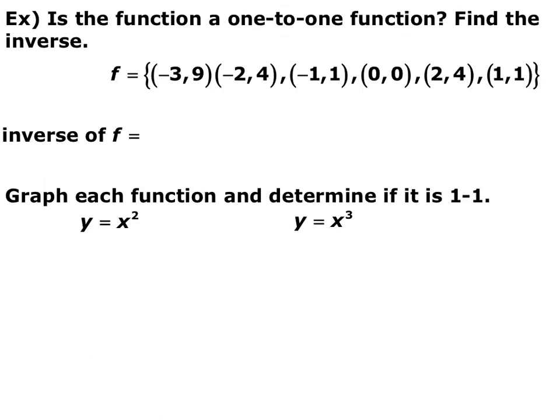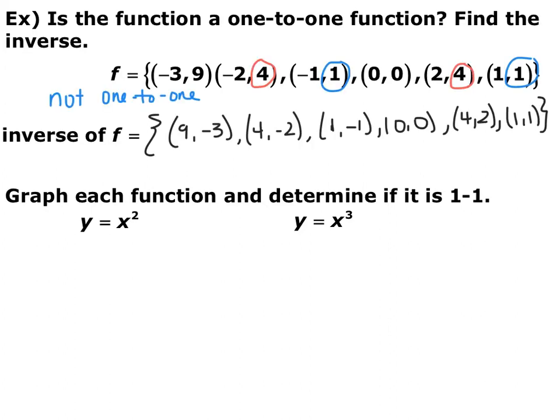Here's a function as a list of coordinate pairs. The first question is: is it a one-to-one function — does each y-coordinate only show up once? Then find the inverse by switching the domain and range, so all x's become y's and all y's become x's. The y-coordinate of 4 and y-coordinate of 1 show up multiple times, so it's not a one-to-one function. The inverse is found by switching every pair. Notice that for the same reason f was not one-to-one, f⁻¹ is not a function — the same issues causing f not to be one-to-one cause f⁻¹ not to be a function.